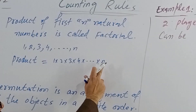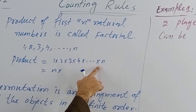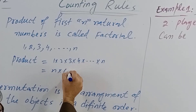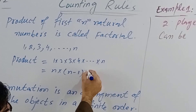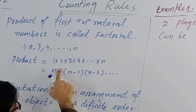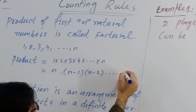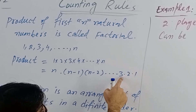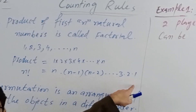If we arrange it from highest to lowest, it is n multiplied by n minus one, then n minus two, and so on, down to three, two, one. This product of the first n natural numbers is what we call factorial — n factorial.